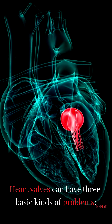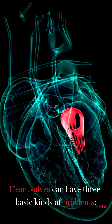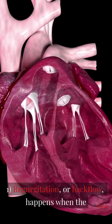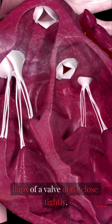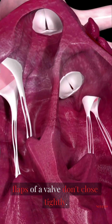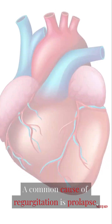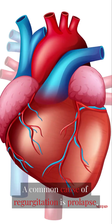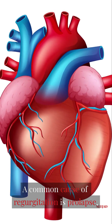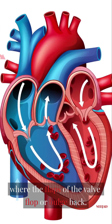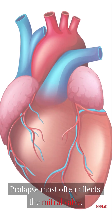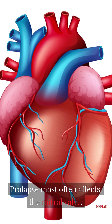Heart valves can have three basic kinds of problems. One, regurgitation or backflow happens when the flaps of a valve don't close tightly. This allows the blood to leak backwards. A common cause of regurgitation is prolapse, where the flaps of the valve flop or bulge back. Prolapse most often affects the mitral valve.